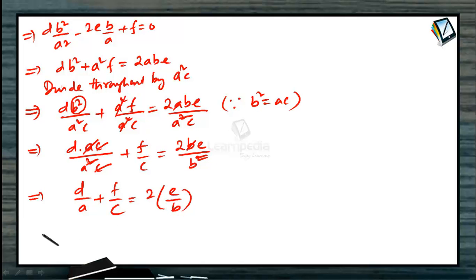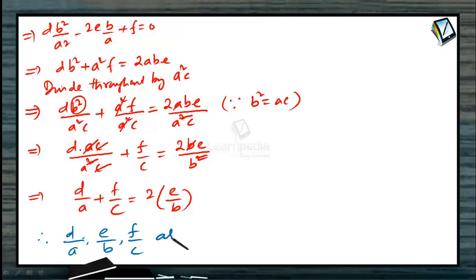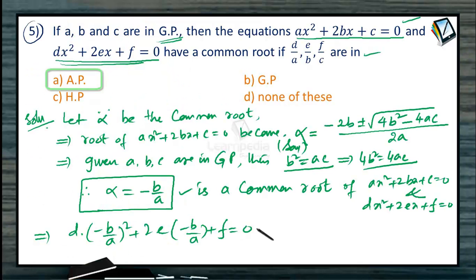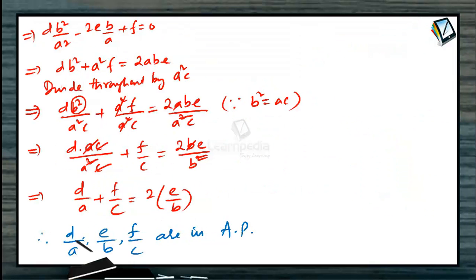So we conclude that D/A + F/C = 2E/B. Therefore D/A, E/B, and F/C are in arithmetic progression, since the sum of the first and third terms equals twice the middle term. Option A is going to be the correct answer for this question.